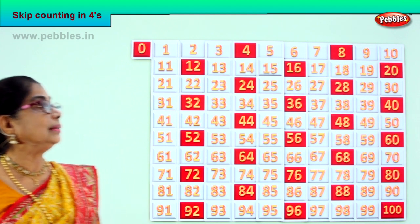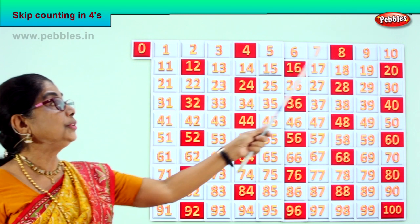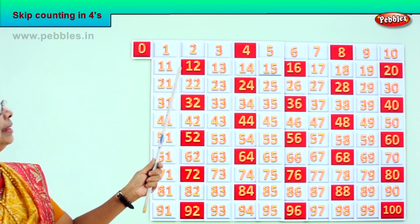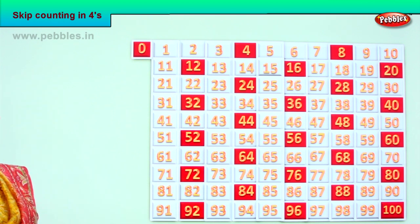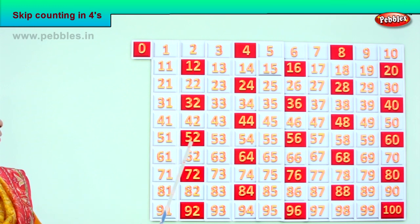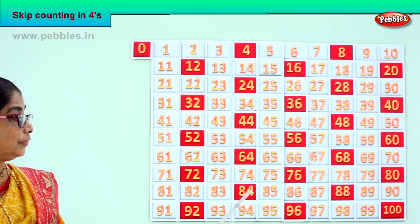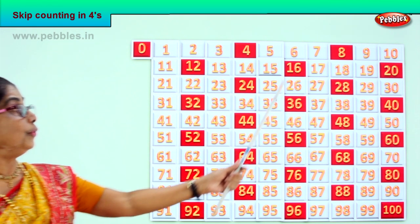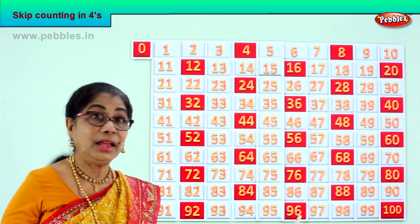Now look at the pattern. See what you have here. From 1 to 10, you have just two numbers. Look at this — you see the beautiful pattern it follows. Look here: 12, 32, 52, 72, 92. Then 4, 24, 44, 64, 84. Then 16, 36, 56, 76, 96. And 8, 28, 48, 68, 88.